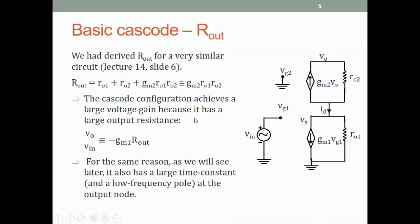The reason the cascode achieves a high gain is because it has a high output resistance. One can roughly say that the voltage gain of this circuit is GM1 of the driver transistor into Rout. We get a high gain because the Rout of a cascode is very high. But for the same reason, a large Thevenin resistance also causes a large time constant and then a low frequency pole, which means that the frequency response of cascodes is slow because of this output resistance. But right now we will not worry about it.